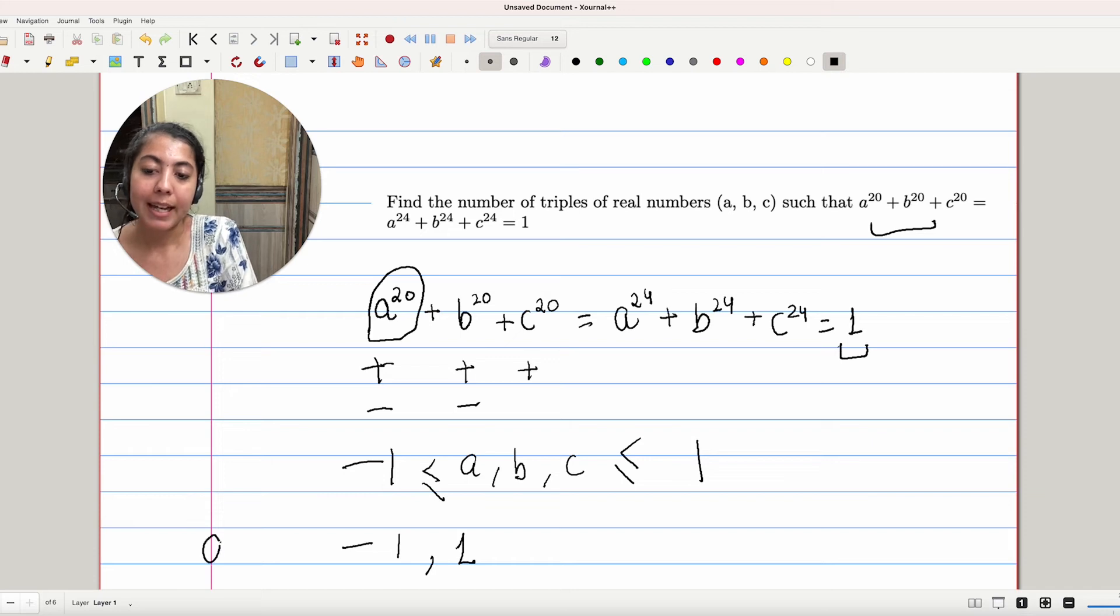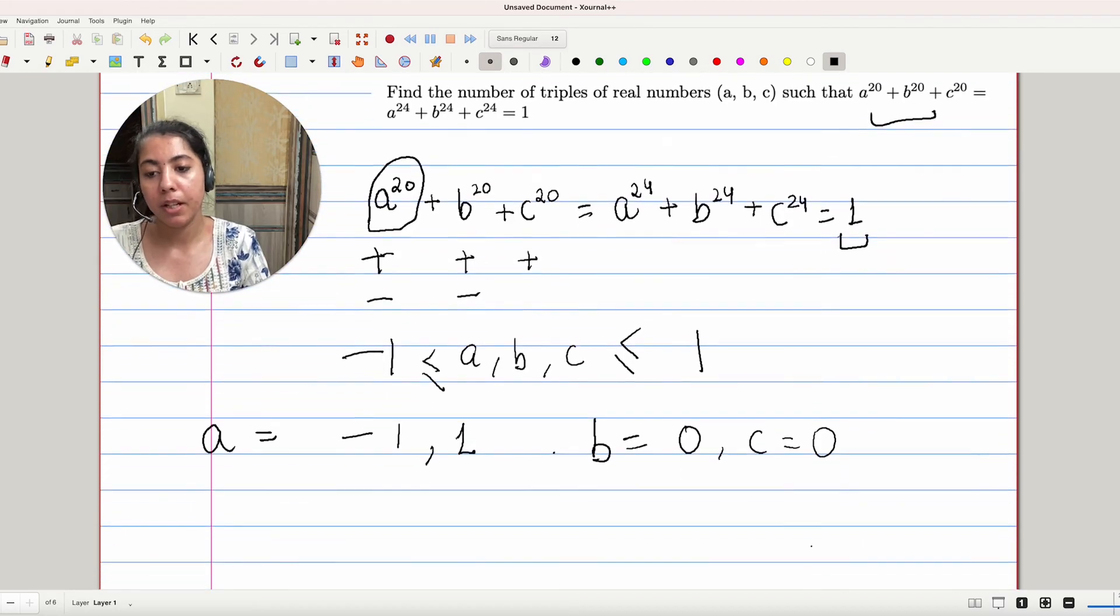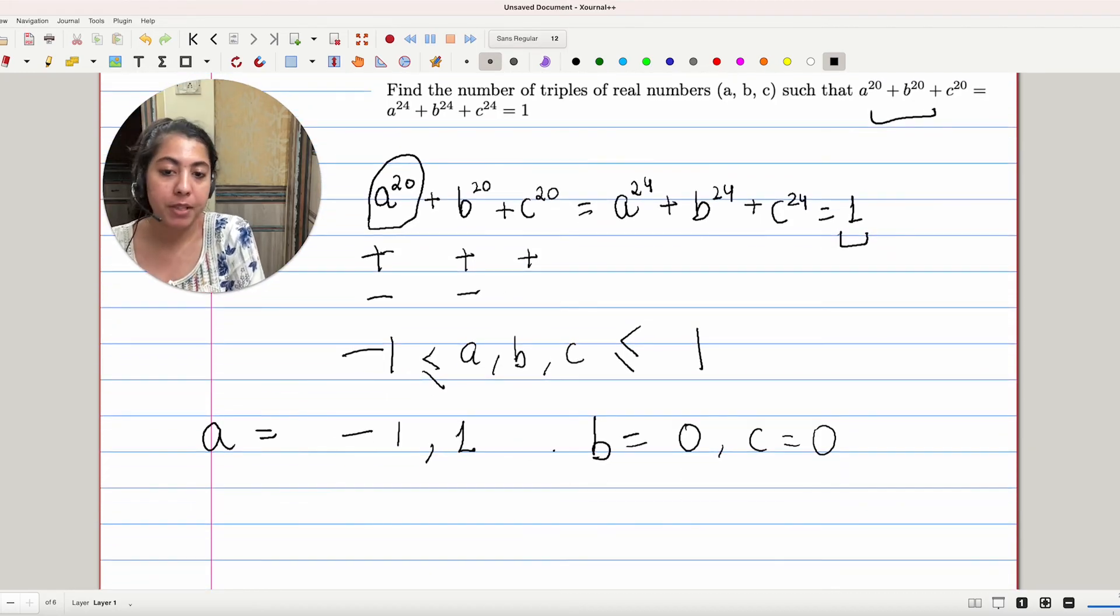So a can be minus 1 or 1. That will lead us to the conclusion that b and c are 0s. And in the same way, we can permute them. We can have b as 1 and a and c as 0. We can have c as 1 and a and b as 0.